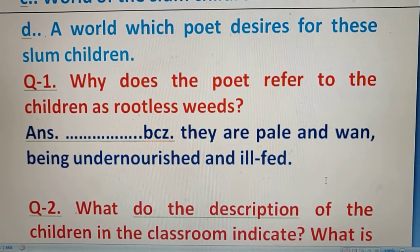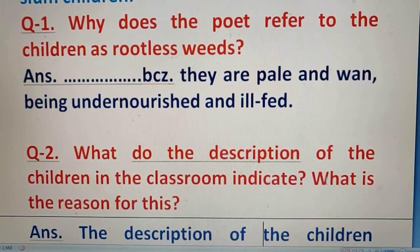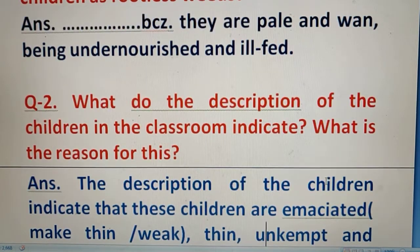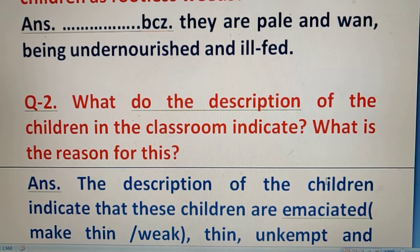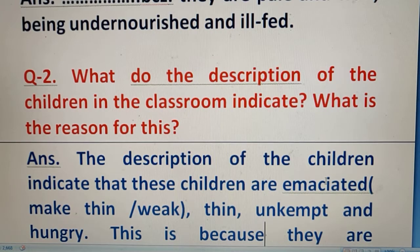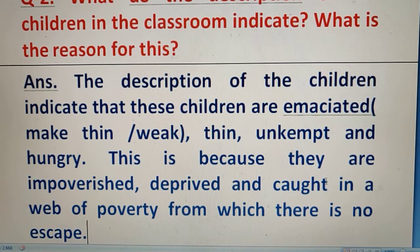Question number 2: What does the description of the children in the classroom indicate, and what is the reason for this? The description of the children indicates that these children are emaciated — they are very weak, thin, unkempt, and hungry. This is because they are impoverished and deprived of basic facilities.